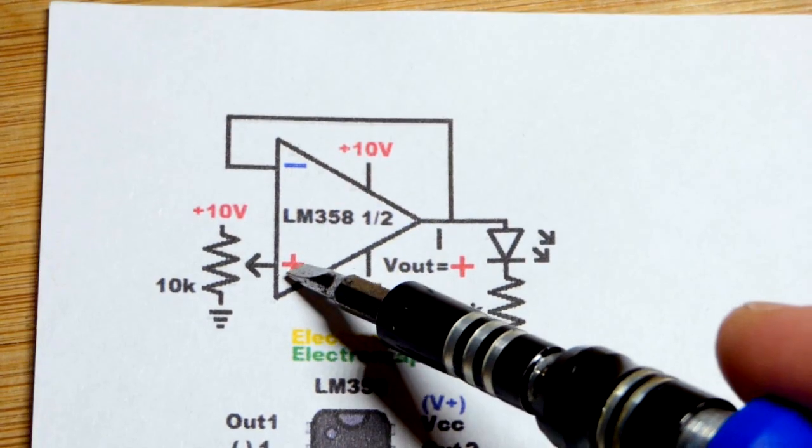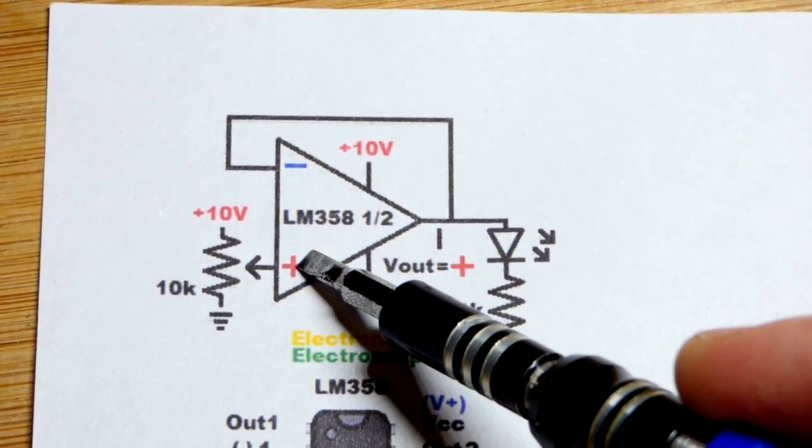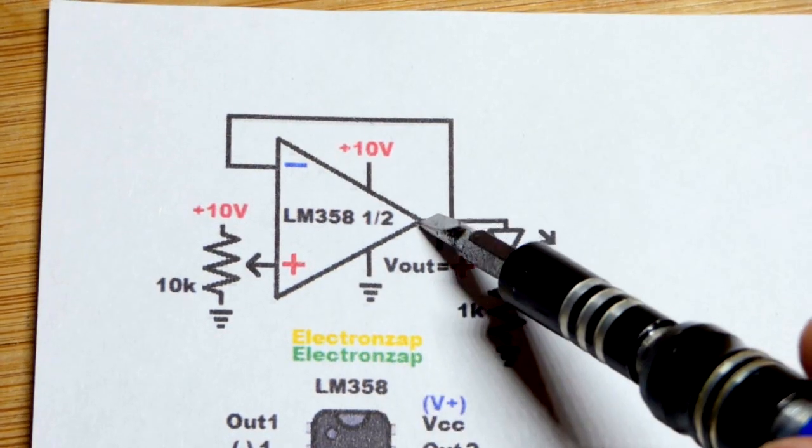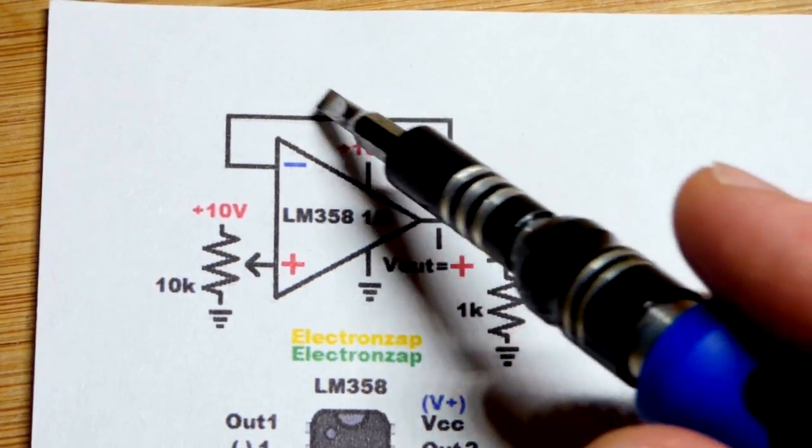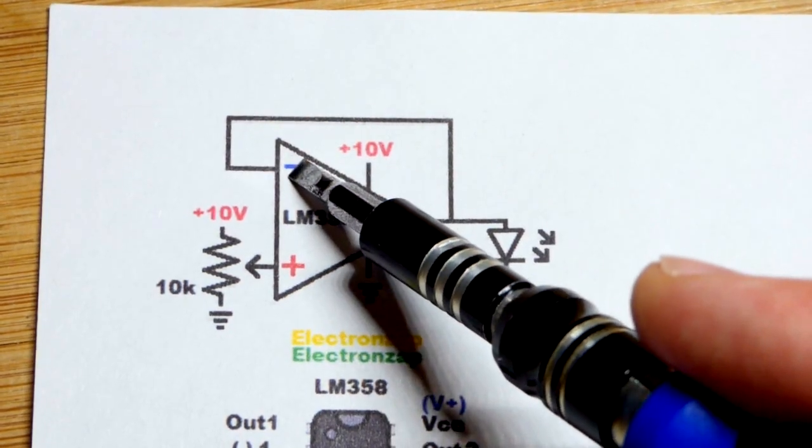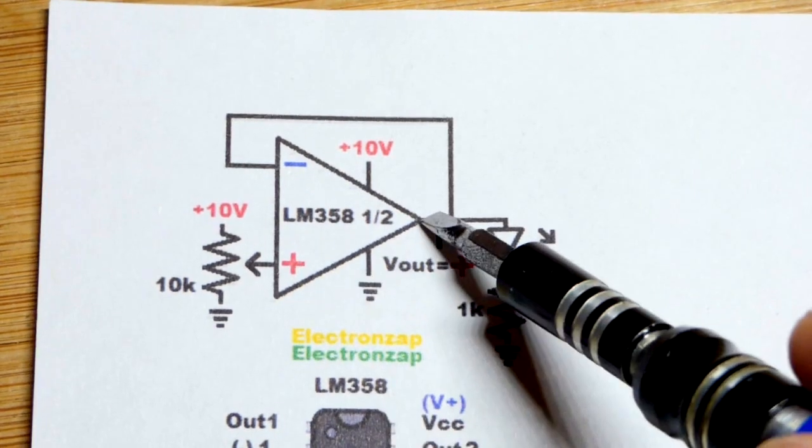And ultimately, it tries to make the voltage more like the non-inverting input. That's why it's non-inverting. That's what the output is trying to be more like. So in any case, it sets the voltage to the inverting input here to be the same voltage at the non-inverting input.